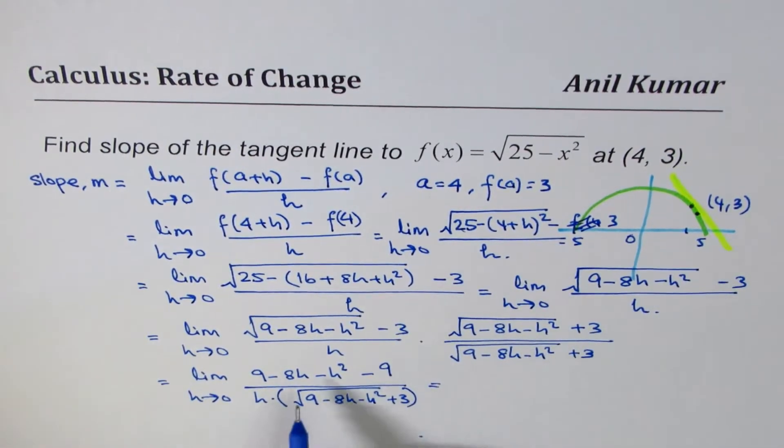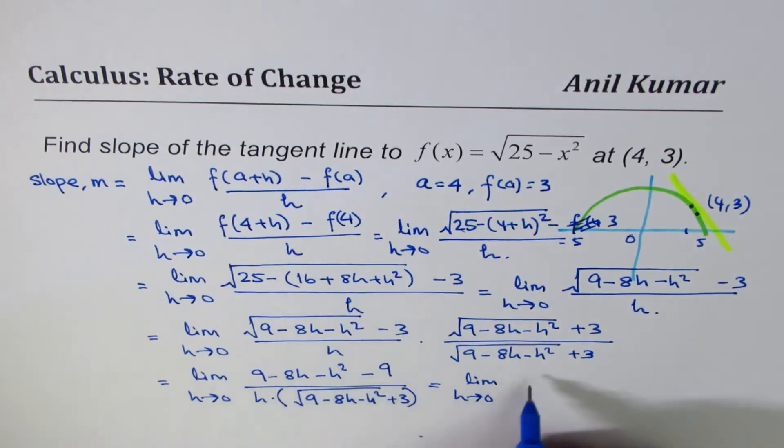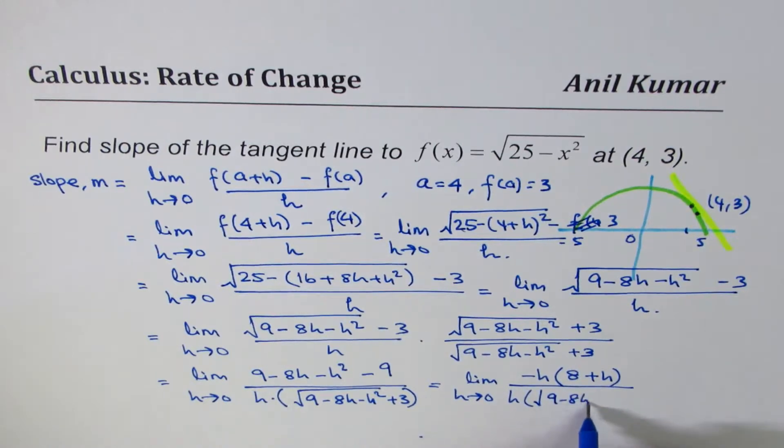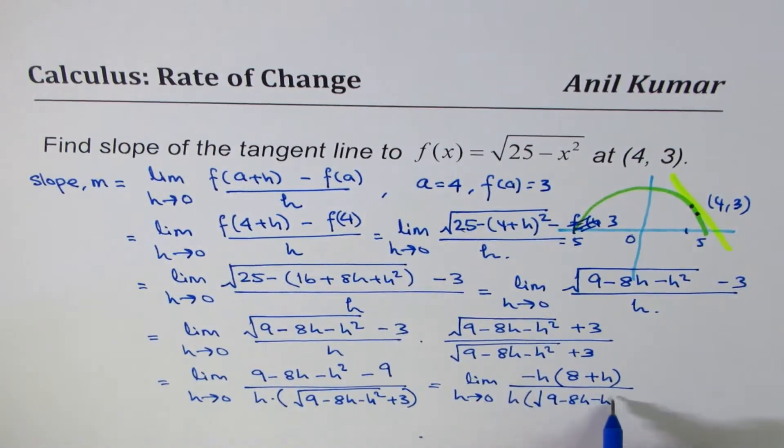Now, in the numerator, 9 minus 9 is 0. So we could write this as limit, h approaches 0. And we have minus 8h minus h square. So I can take minus h common, so we get 8 plus h. Divide by h times square root of 9 minus 8h, minus h square, plus 3.